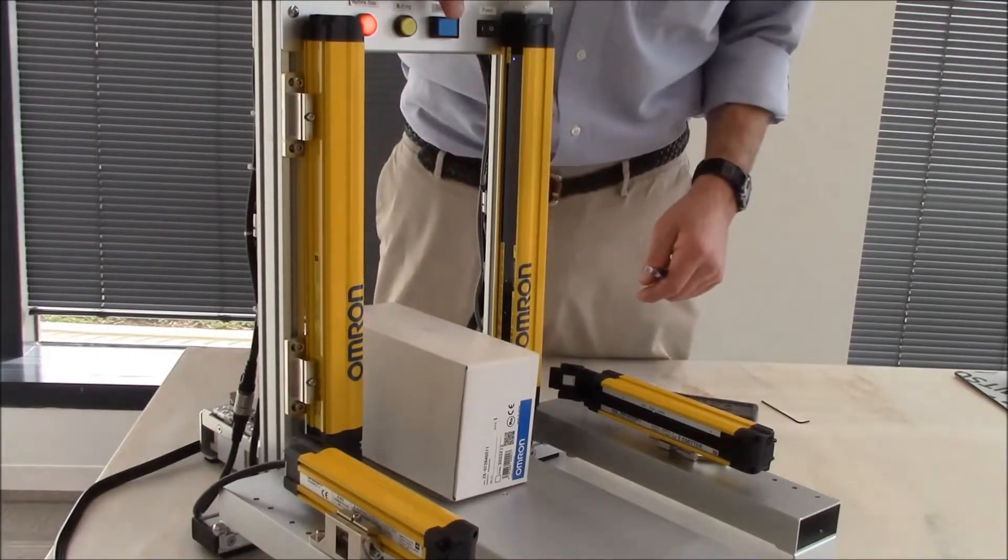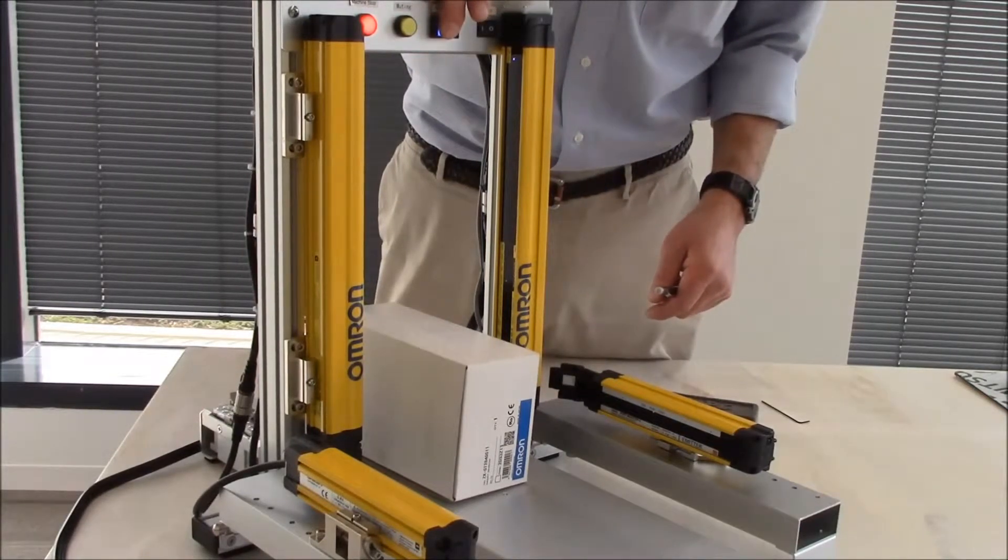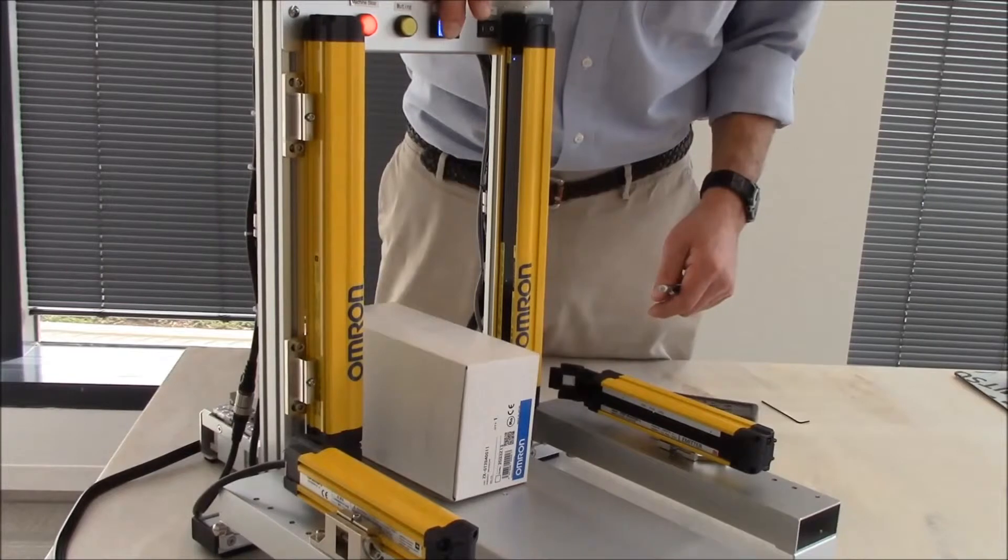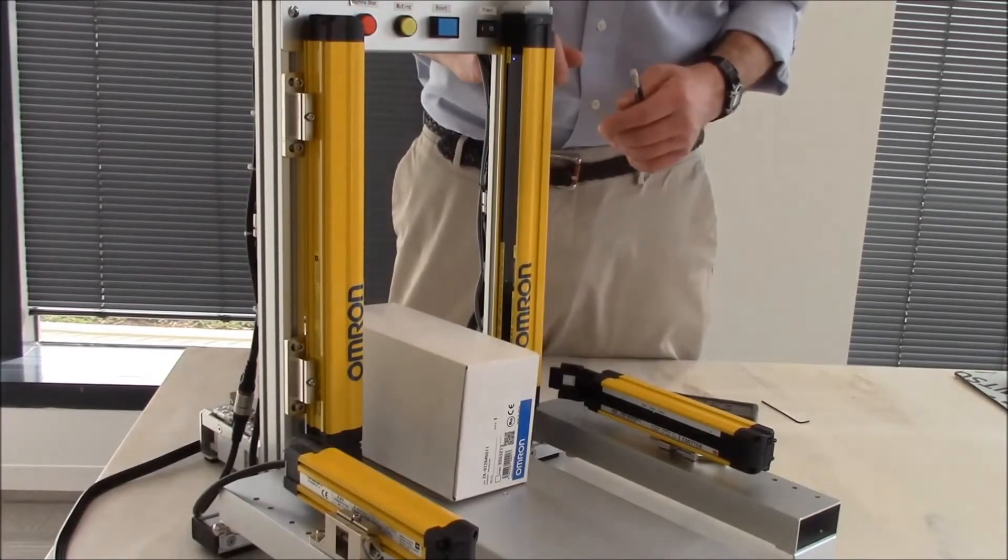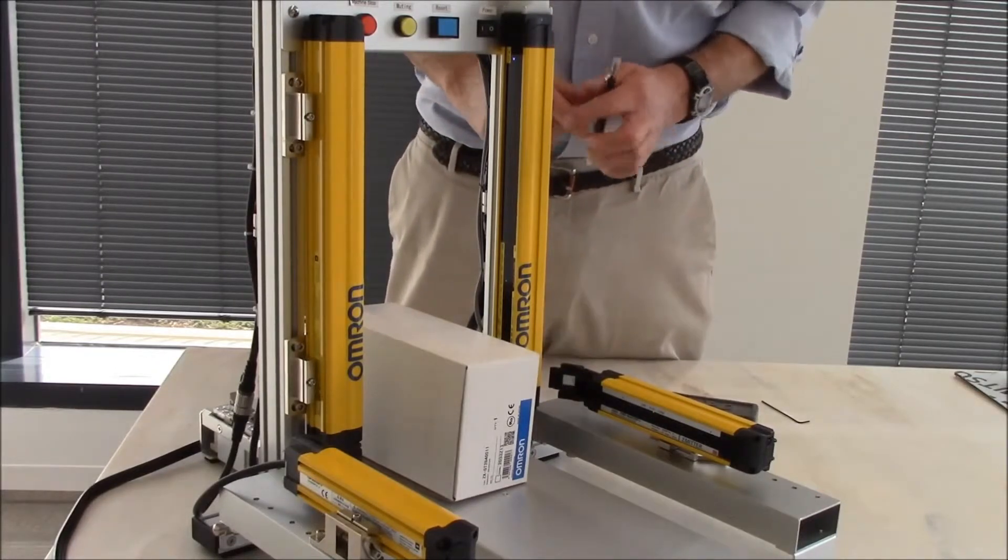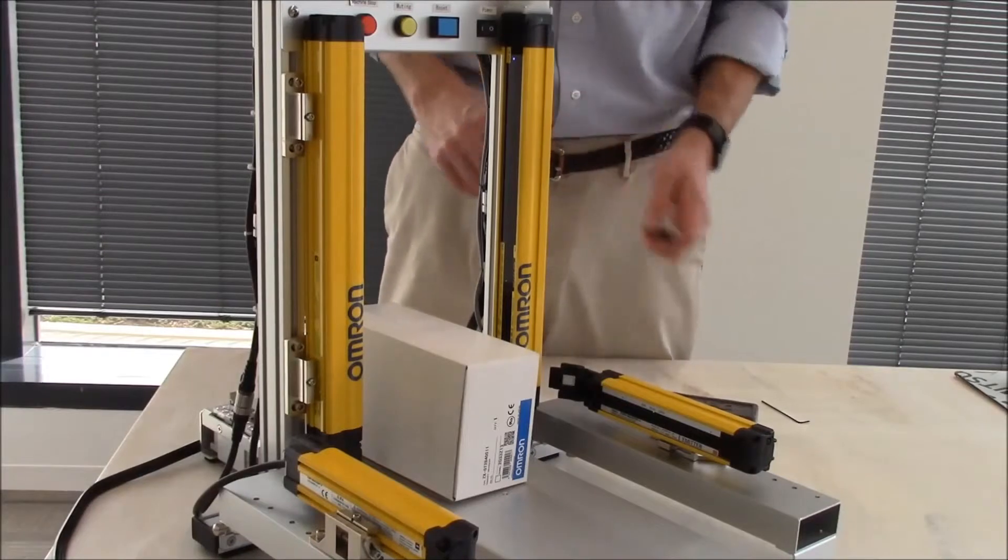Now all I have to do is either hold the reset key for three seconds and release it to reset the light curtain, or I can cycle power on the light curtain, either one. And you'll notice now my safety output is satisfied.